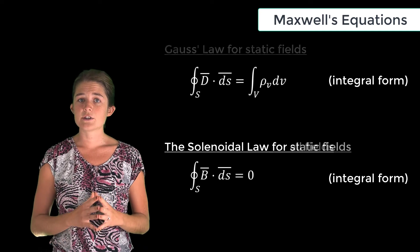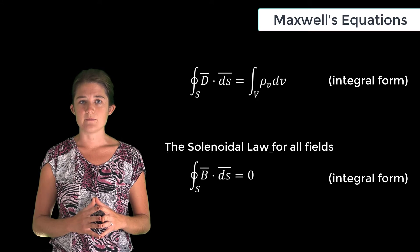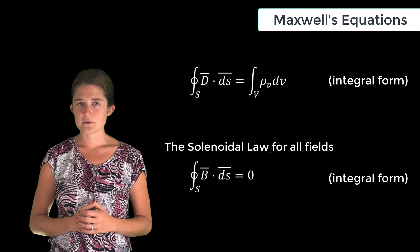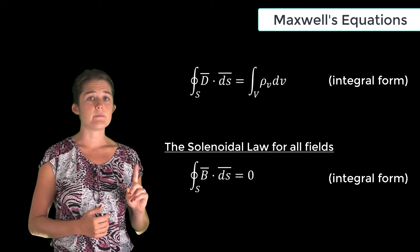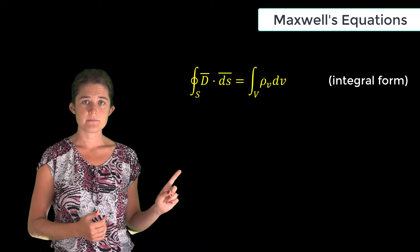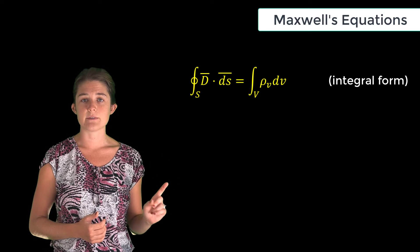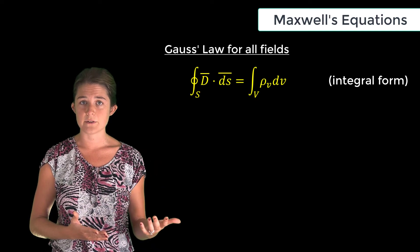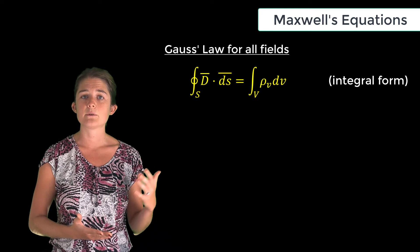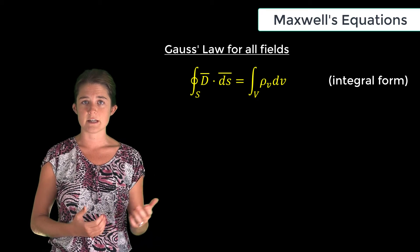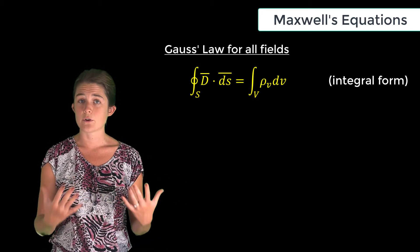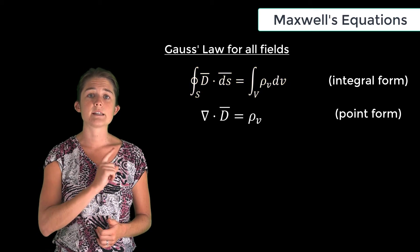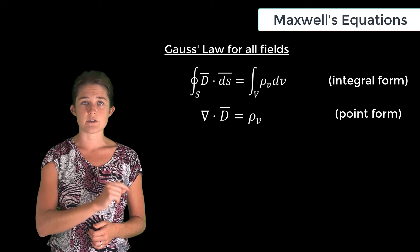The two remaining laws — Gauss's law and the solenoidal law — do not change when we add time variance; they remain exactly as they were for static fields. Gauss's law states that the integral over a closed surface of D dot ds — the total electric flux through a closed surface — equals the volume integral of the charge density within the surface, or the total charge enclosed. In point form, the divergence of D equals the charge density.